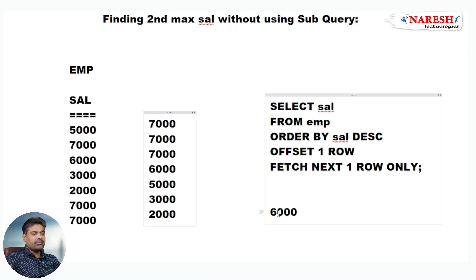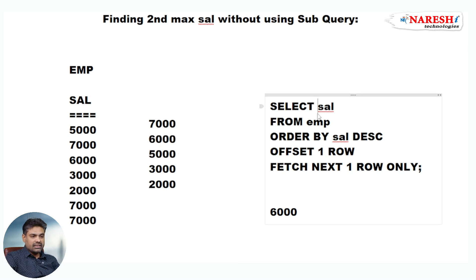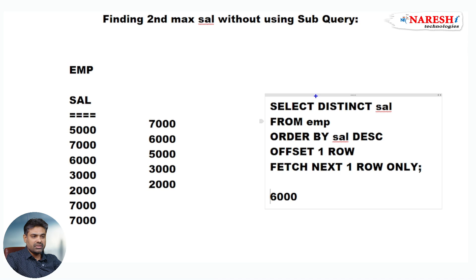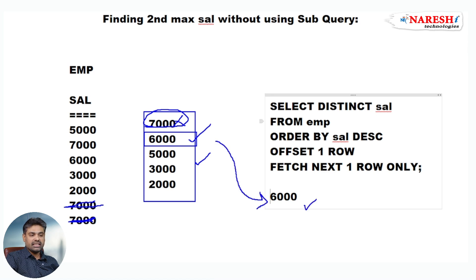That is why we have to select distinct salaries. To select distinct salaries, use the DISTINCT clause. So: SELECT DISTINCT salary FROM EMP, ORDER BY salary descending, OFFSET 1 ROW, FETCH NEXT 1 ROW ONLY. It finds the second maximum salary. Because of the DISTINCT clause, duplicates are eliminated. Distinct salaries are arranged in descending order, OFFSET 1 ROW skips the first row, and FETCH NEXT 1 ROW ONLY fetches the next row — so we get the second maximum salary 6000.